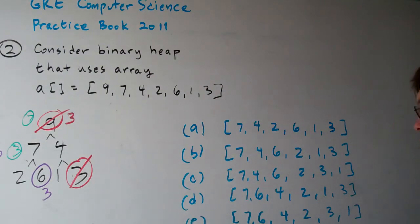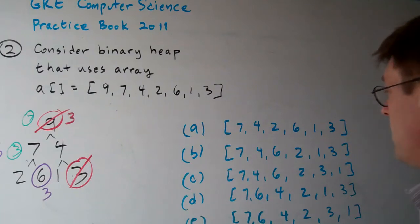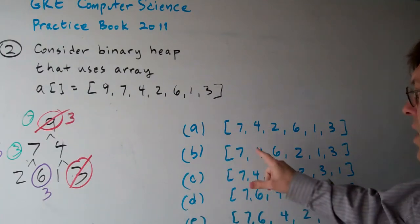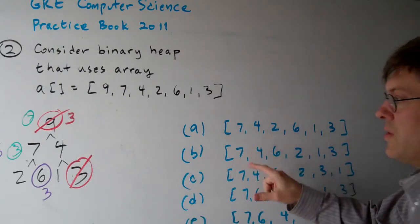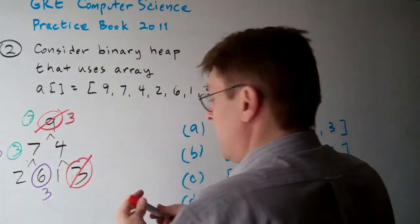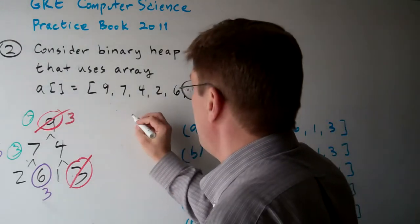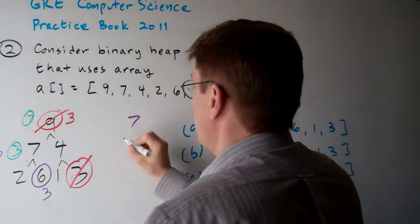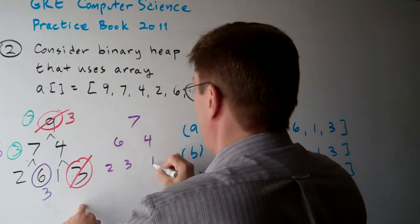And that's where we have the final result. So you can kind of tell right from the get-go that it's not going to be seven, four. It's going to be seven, six. Let me write this out so it's a little clearer. It's seven, then six, four, and then two, three, one.